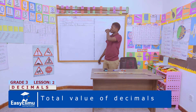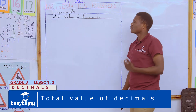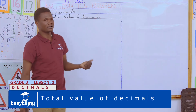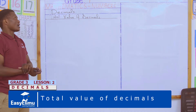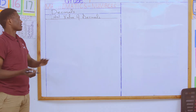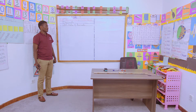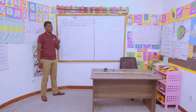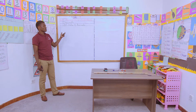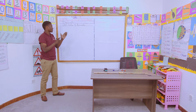So in today's session, we are going to discuss the total value of decimals. If you can remember, in our previous session we discussed the place value of decimals. Normally, we need to appreciate that there is a correlation between the place value and the total value. In other words, for you to get the total value, you need to have the knowledge of the place value. So they are close to each other — they go together.